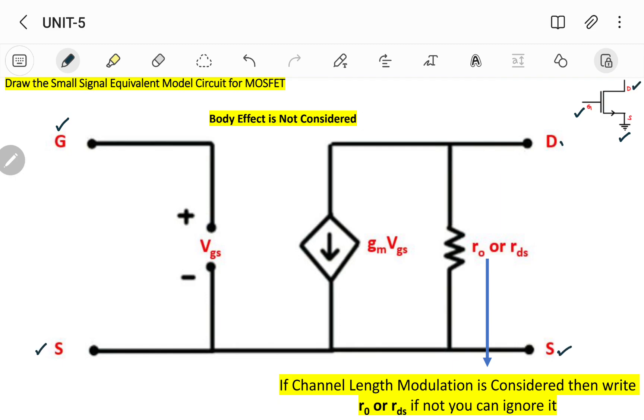For all the MOSFETs, whether it can be either NMOS or PMOS, always the gate current IG will be zero. If gate current IG is zero, then VGS will be zero. So this VGS equals zero will be indicated by means of open circuit. That's what here I've taken: VGS open circuited. Generally we will apply input at this point between gate and source.